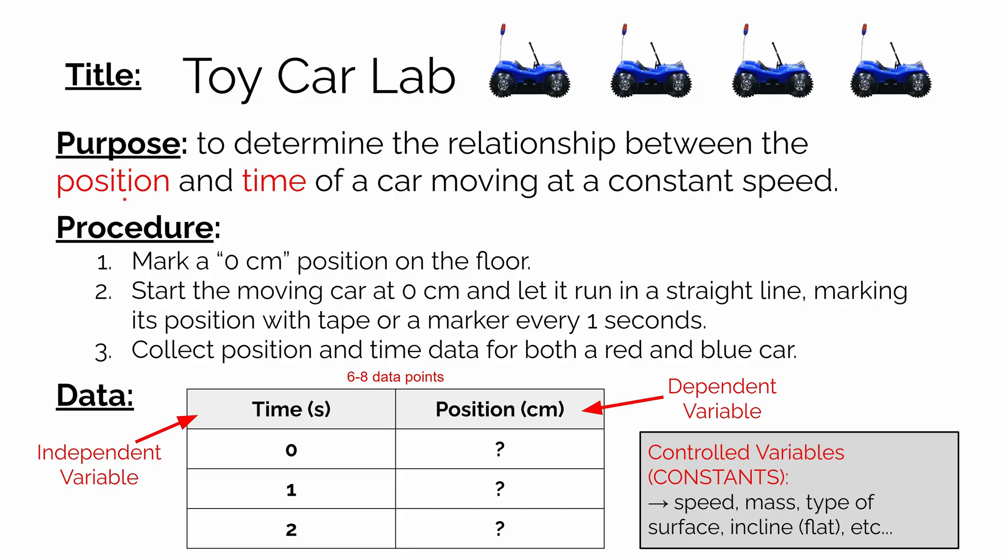In order to investigate the motion, we specifically looked at the relationship between the position and time of the car moving at a constant speed. To do that, we collected at different times where the car physically was. What was its position along a metric measuring tape? And we did that for six to eight different data points.